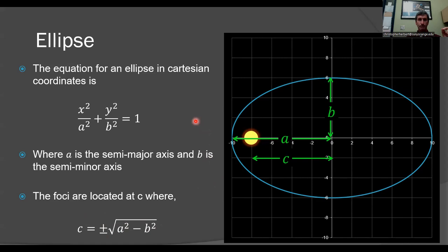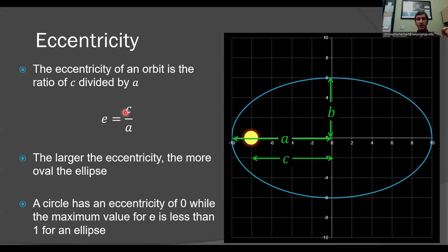Eccentricity, I've been throwing that word around a lot. Eccentricity is just the ratio of how large the distance to the focus is from the center and the semi-major axis. So for a circle, C would be zero, so the eccentricity of a circle is zero. As C becomes larger and larger, as the ellipse stretches out, E becomes larger and larger also.